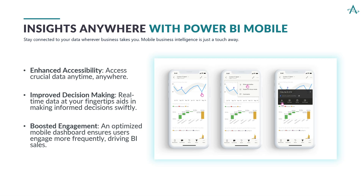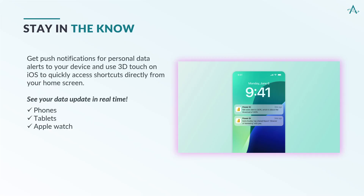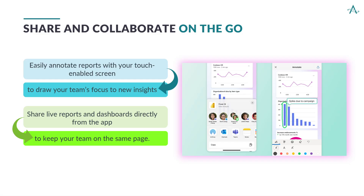Designing for mobile not only improves accessibility and decision making, but also fosters greater user engagement, making it a valuable investment for any business. Stay in the know: get push notifications for personal data alerts and use 3D Touch on iOS to quickly access shortcuts directly from your home screen. See your data update in real time on phones, tablets, and Apple Watch. Share and collaborate on the go: easily annotate reports with your touch-enabled screen to draw your team's focus to new insights, and share live reports and dashboards directly from the app to keep your team on the same page.